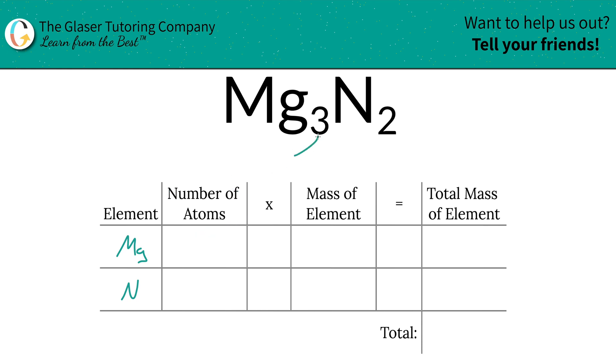Next is to identify the number of atoms, and that's where the subscripts come into play. So there are three magnesium and there are going to be two nitrogen.